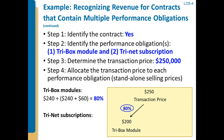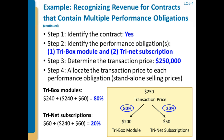For the tri-box, it's $240 for tri-boxes and $60 for the tri-net subscription normally, so we've got $240 over $300, or 80%, that gets allocated to the tri-boxes. So for every $250 sale of a tri-boxes system, we're going to have $200 of that allocated to the performance obligation of delivering tri-boxes modules.